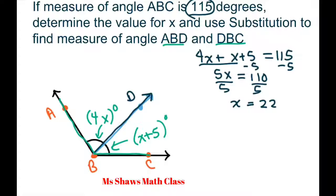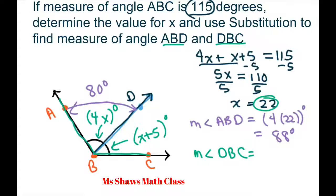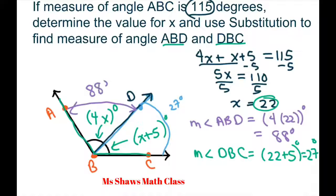Now to find the two different angle measures, we're going to use substitution. For the measure of angle ABD, that's going to equal 4 times 22, which equals 88 degrees — so this angle right here is 88 degrees. For the measure of angle DBC, we plug in 22 plus 5, which equals 27 degrees.